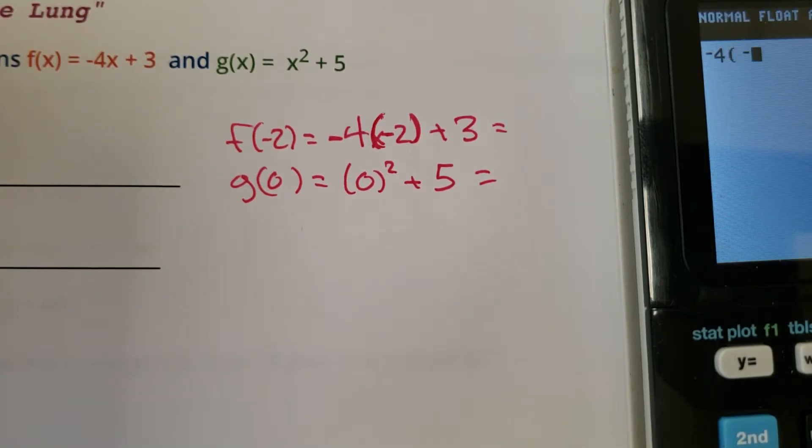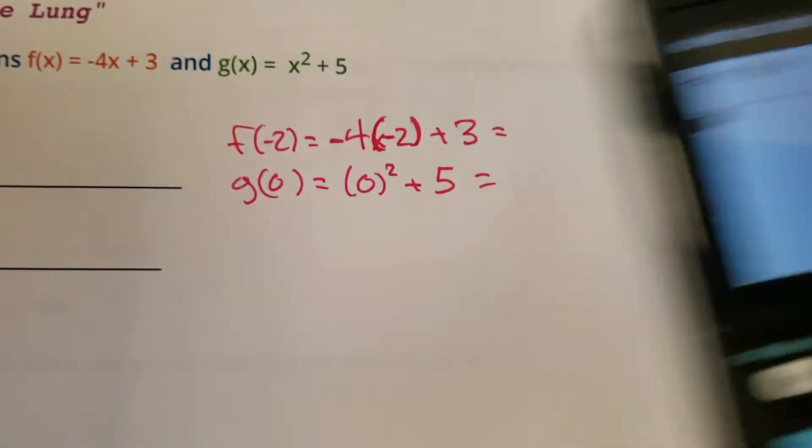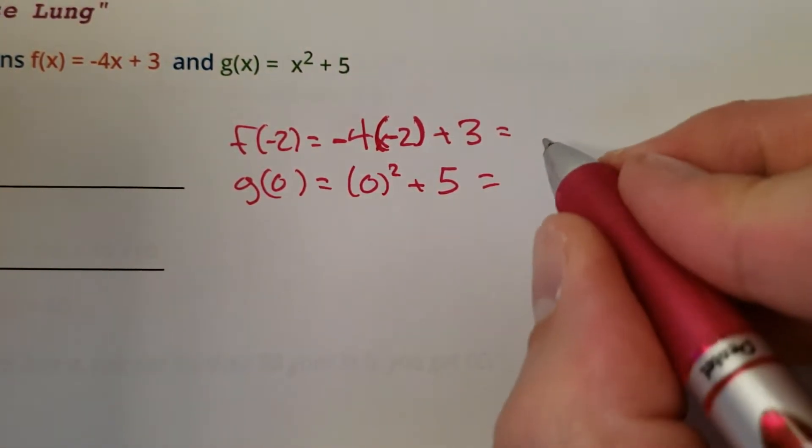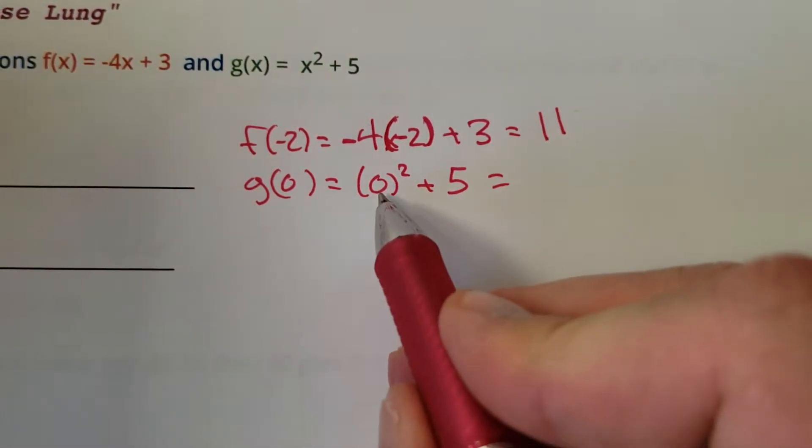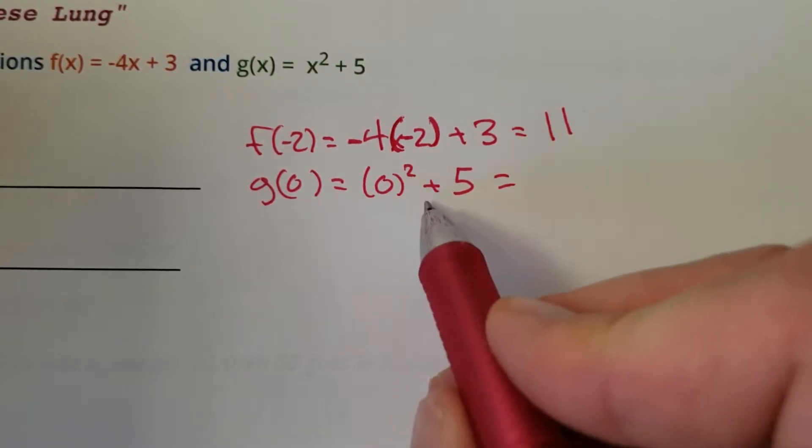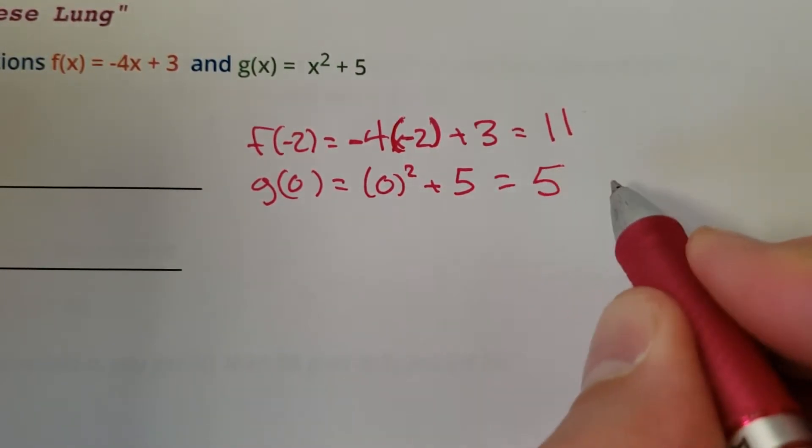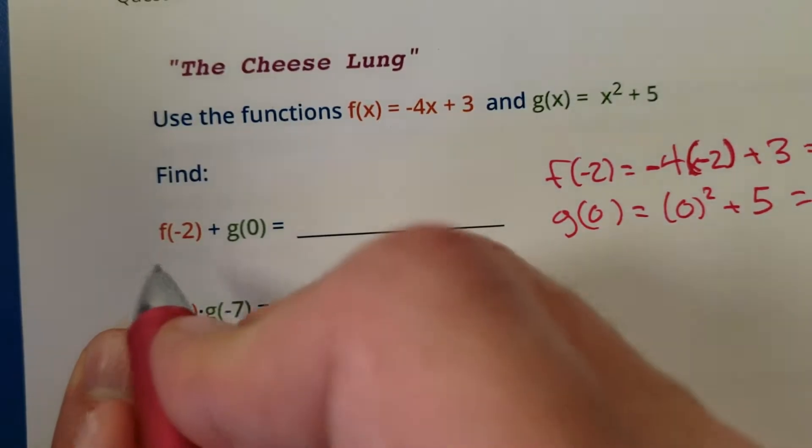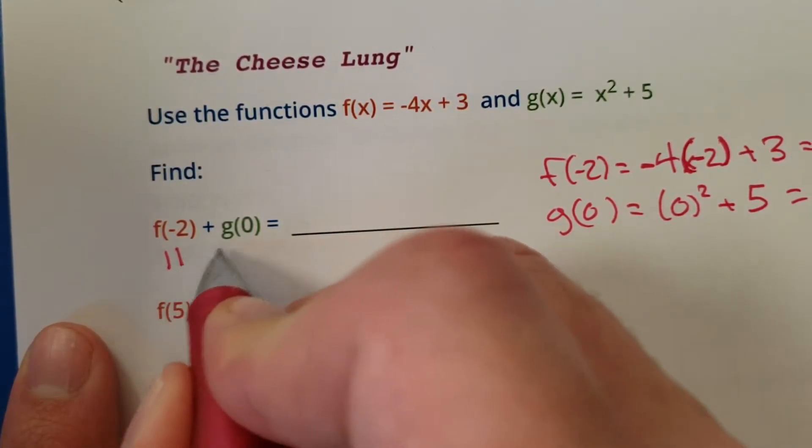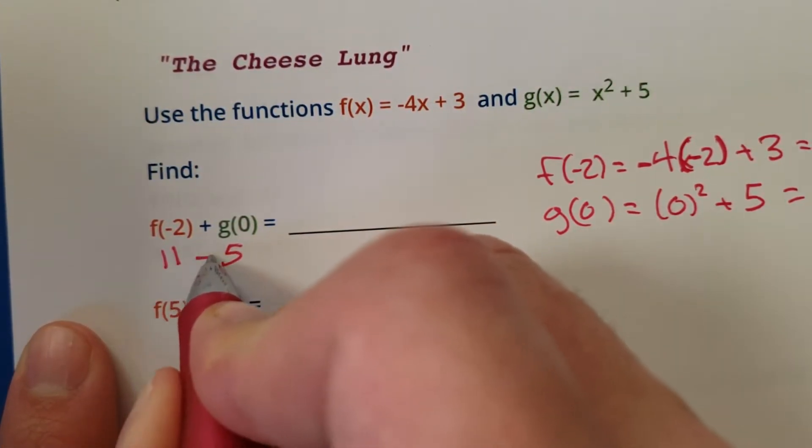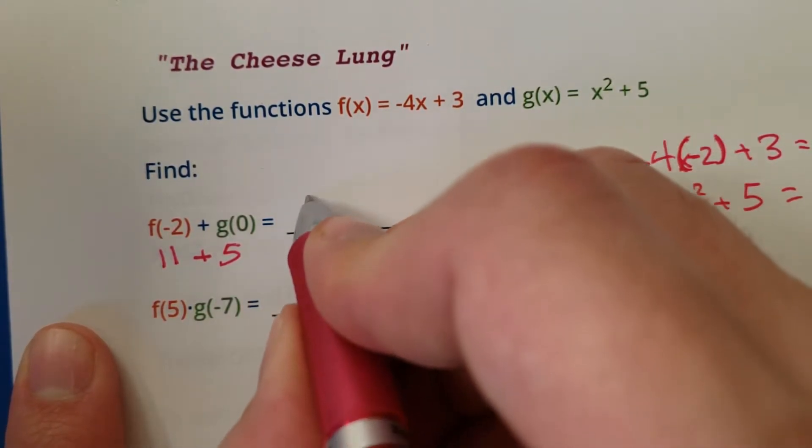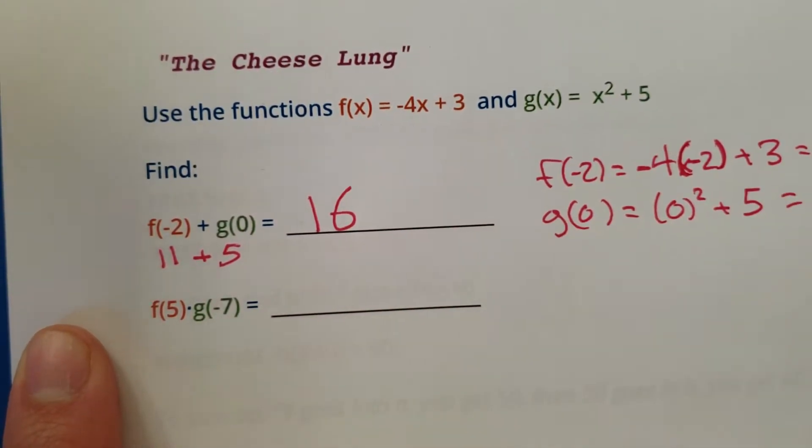Here we go. Negative 4 times negative 2 plus 3 is going to be 11. Mental math. 0 squared is 0. 0 plus 5 is 5. So our f of negative 2 was 11, our g of 0 was 5. 11 plus 5 is our final move. Don't trip at the finish line. You should get 16.